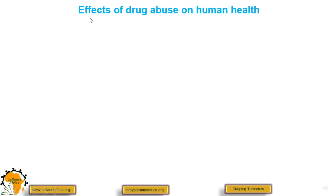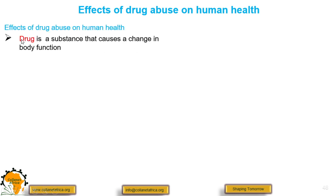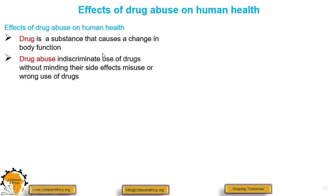We conclude by looking at the effects of drug abuse on human health. A drug is a substance that causes a change in body function. Drug abuse is the indiscriminate use of drugs without minding their side effects — it can be the misuse or wrong use of drugs for the wrong purpose.